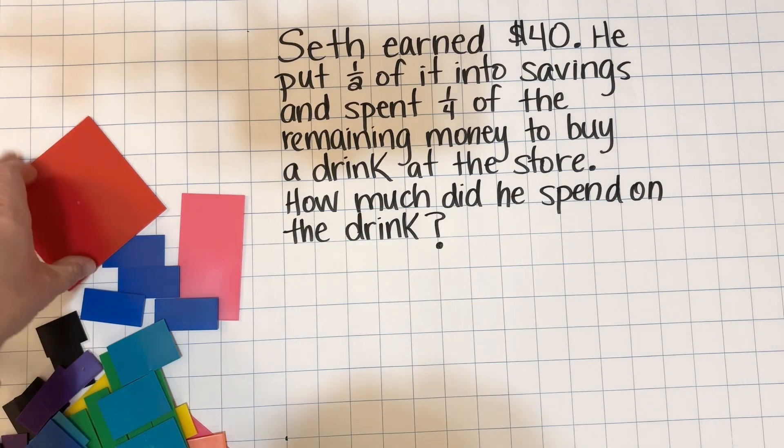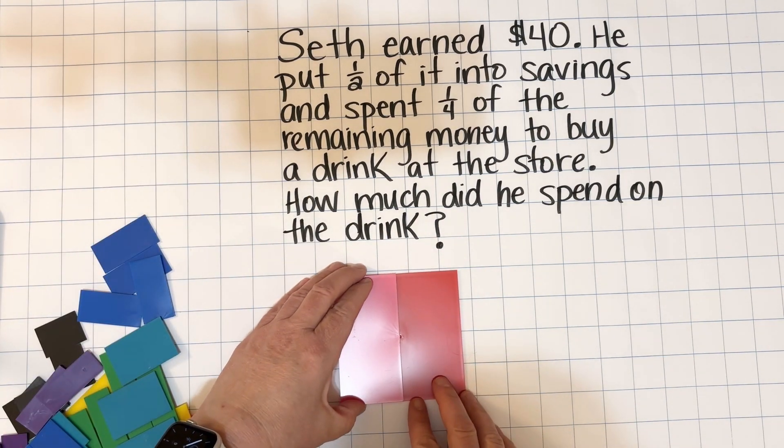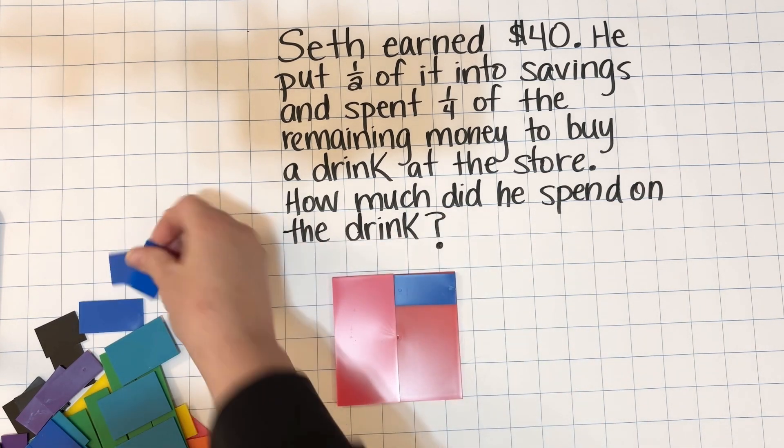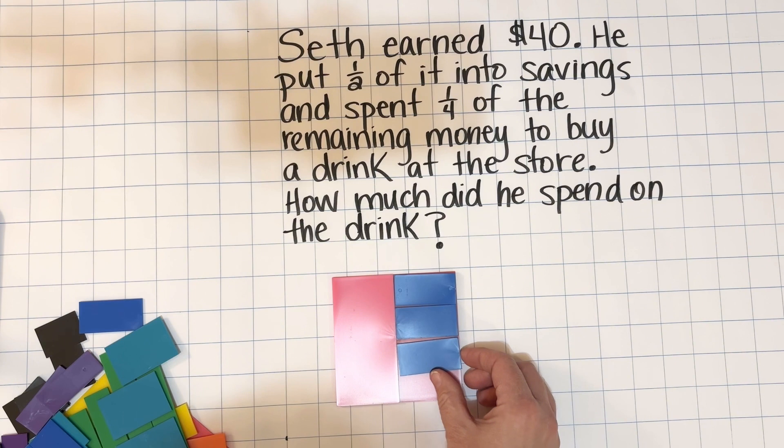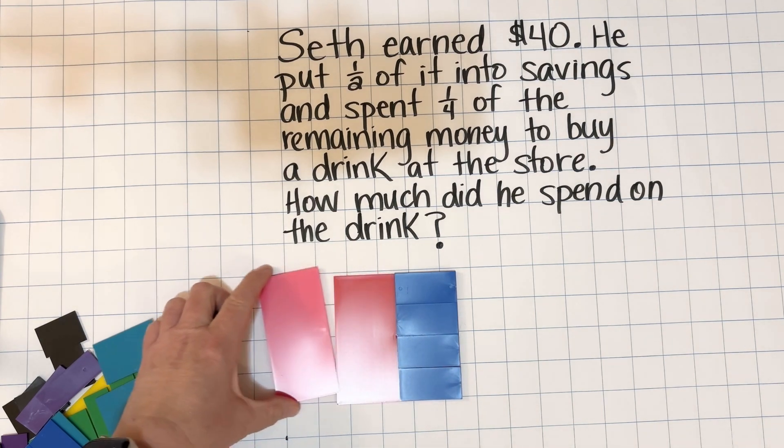We're going to begin with these concrete fraction tiles. This red piece represents Seth's earnings. We know that he put half of it into savings, so we'll show that with the pink rectangle. And now we need to figure out one-fourth of the remainder, so we're going to show that, and that piece right there will represent how much the drink cost at the store.